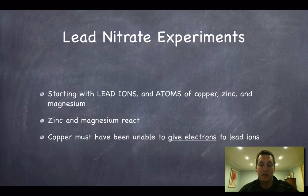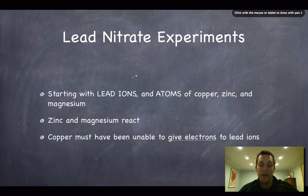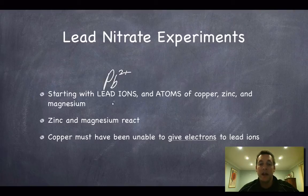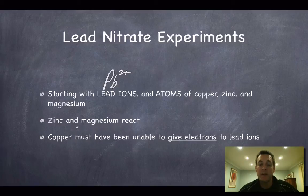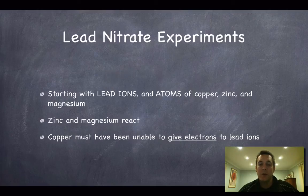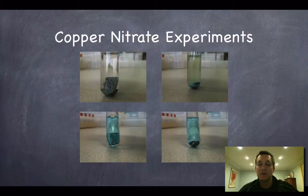To sum up the lead nitrate experiments: we started with lead ions (Pb²⁺) and atoms of copper, zinc, and magnesium. Zinc and magnesium reacted with the lead ions — they were good enough reducing agents to give electrons to lead ions. Copper, however, was unable to give its electrons to lead ions because it wasn't a good enough reducing agent.